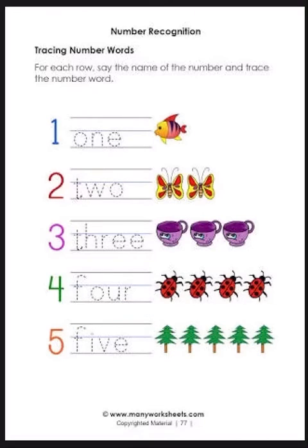So let's do it again. Say the spelling of one: O-N-E, one. How many fish? One. O-N-E, one.